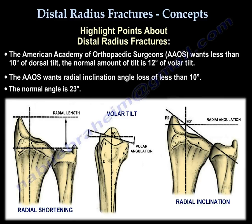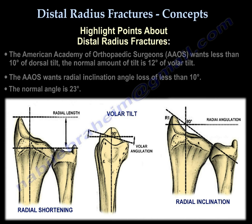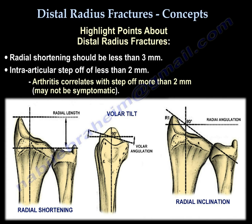The American Academy of Orthopedic Surgeons recommends less than 10 degrees of dorsal tilt. The normal amount of tilt is 12 degrees of volar tilt. It also recommends a radial inclination angle loss of less than 10 degrees — the normal angle is 23 degrees. Radial shortening should be less than 3 mm. The intra-articular step-off should be less than 2 mm, as arthritis correlates with a step-off of more than 2 mm, though the arthritis may not be symptomatic.